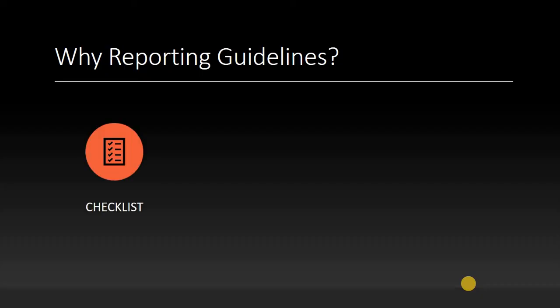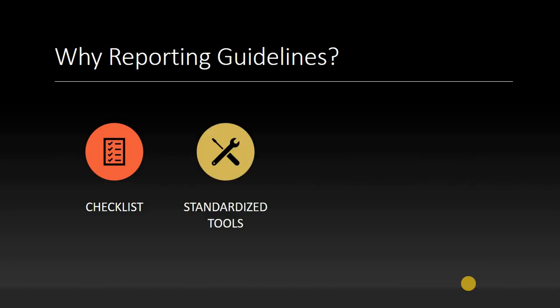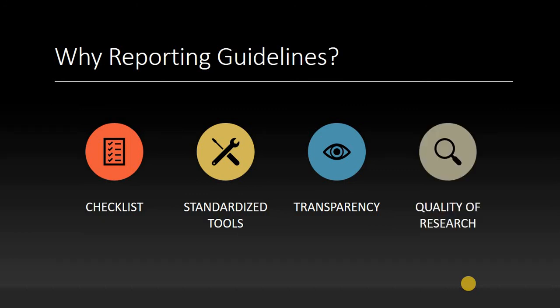To sum up, reporting guidelines are checklist-based objective assessment tools which are standardized. They help in increasing the transparency and quality of research. All these reporting guidelines are easily available and freely downloadable in editable format at equatornetwork.org. Thank you very much.